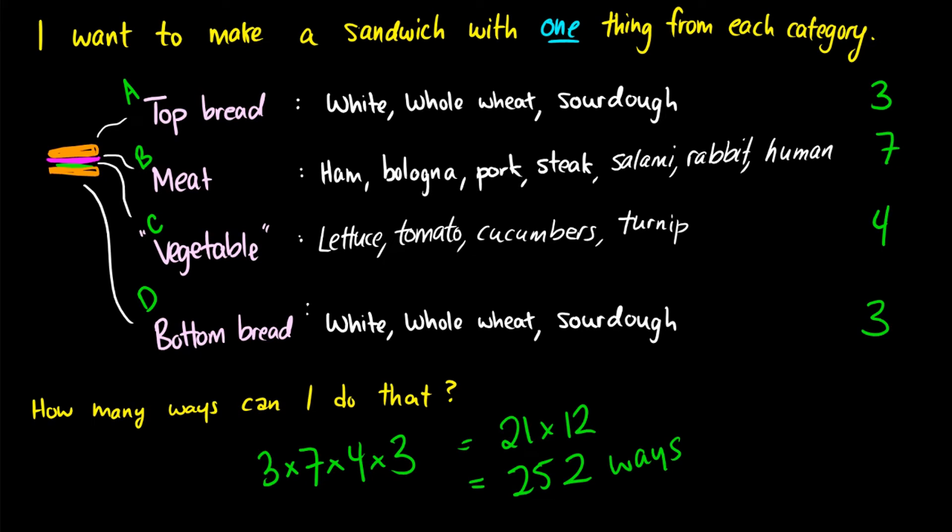Okay? So to go over that logic again, essentially we're picking one from each. So we might pick white bread on top, bologna as the meat, lettuce as the vegetable, and then whole wheat as the bottom bread. Okay? So in the first task, we pick one way to do it. The second task, we pick a second way. The third task, we pick a third way, and we get 252 total options. So that's an example of the rule of product.